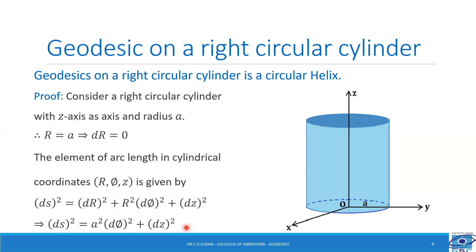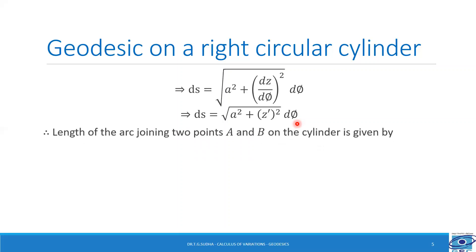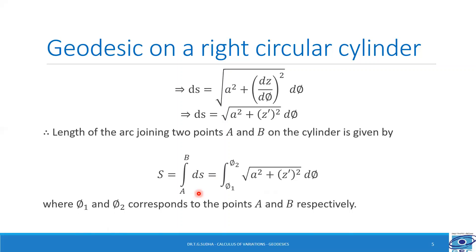Now, let us solve for dS. We remove dφ² outside the root sign, so we get dS = √(A² + (dz/dφ)²) dφ. dz/dφ can be written as z′. So we get dS = √(A² + z′²) dφ. To find the arc length between any two points, we integrate dS between the two points A and B. So S = ∫ dS = ∫(φ₁ to φ₂) √(A² + z′²) dφ, where φ₁ and φ₂ correspond to points A and B respectively.